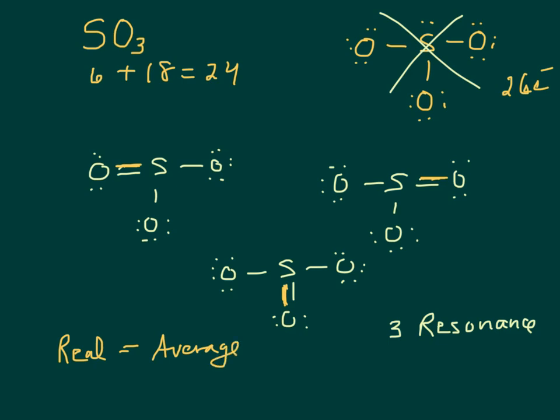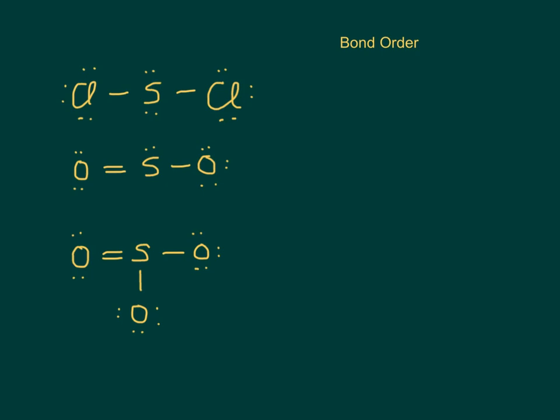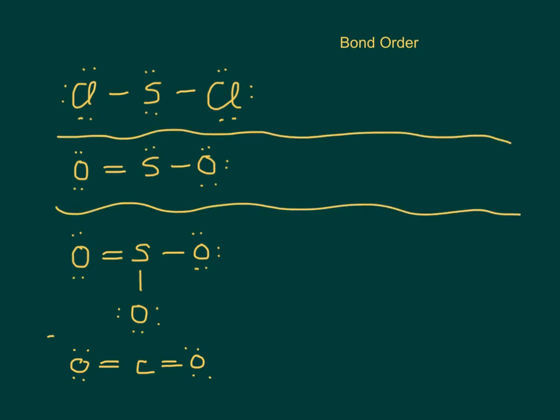So we're going to come up with something to describe that called bond order. We're going to look at these structures, including another one. And I'm going to go ahead and add carbon dioxide here at the bottom. And we're going to look at where the electrons are. And what the bond order refers to is single bonds, double bonds, triple bonds, somewhere in between.